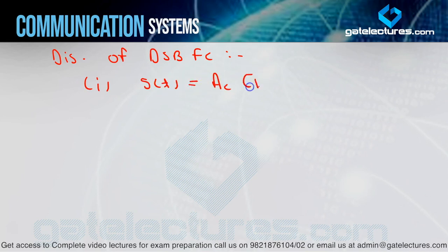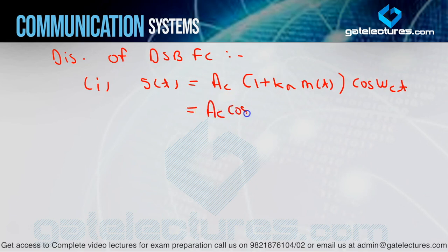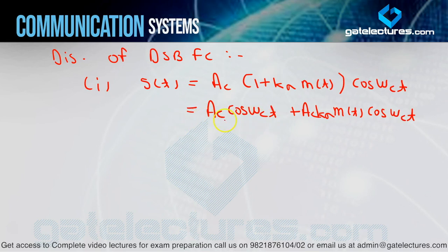If you look carefully at the equation: S(t) = AC[1 + KA·m(t)]·cos(ωC·t). If I open this equation, it becomes: AC·cos(ωC·t) + AC·KA·m(t)·cos(ωC·t). You can clearly see that there is an extra term for the carrier which contains no message part — that term is wastage.